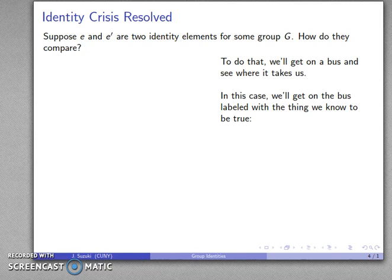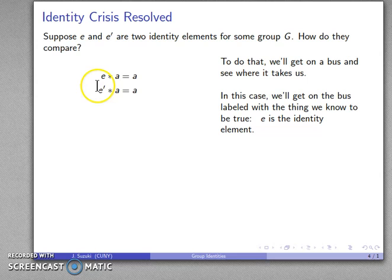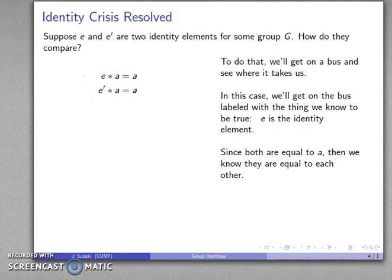So we'll get on the bus and see where it takes us. In this case, the bus that we're going to get onto is labeled with the one thing we know to be true. The one thing we're starting with, E, is the identity element. So I know that E times A is equal to A for any element of the group. But if I know that E prime is also an identity element, then I know E prime star A has to be A as well.